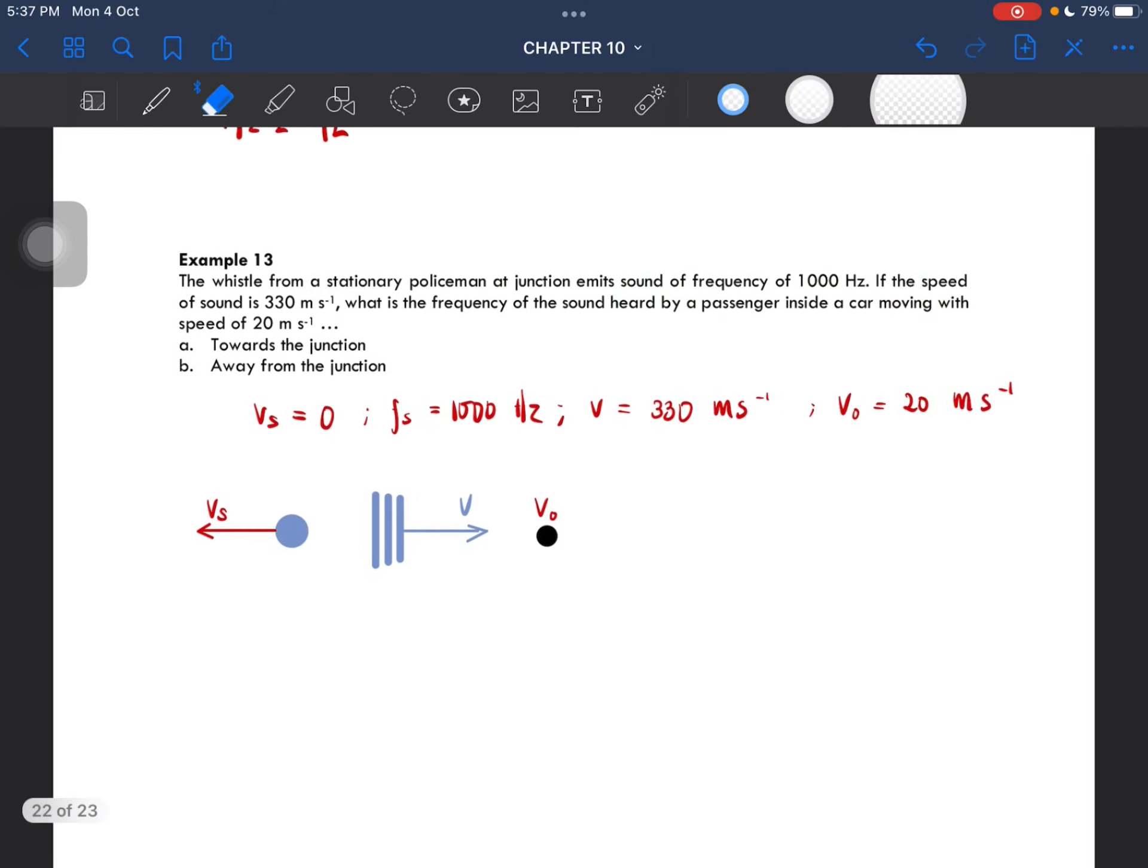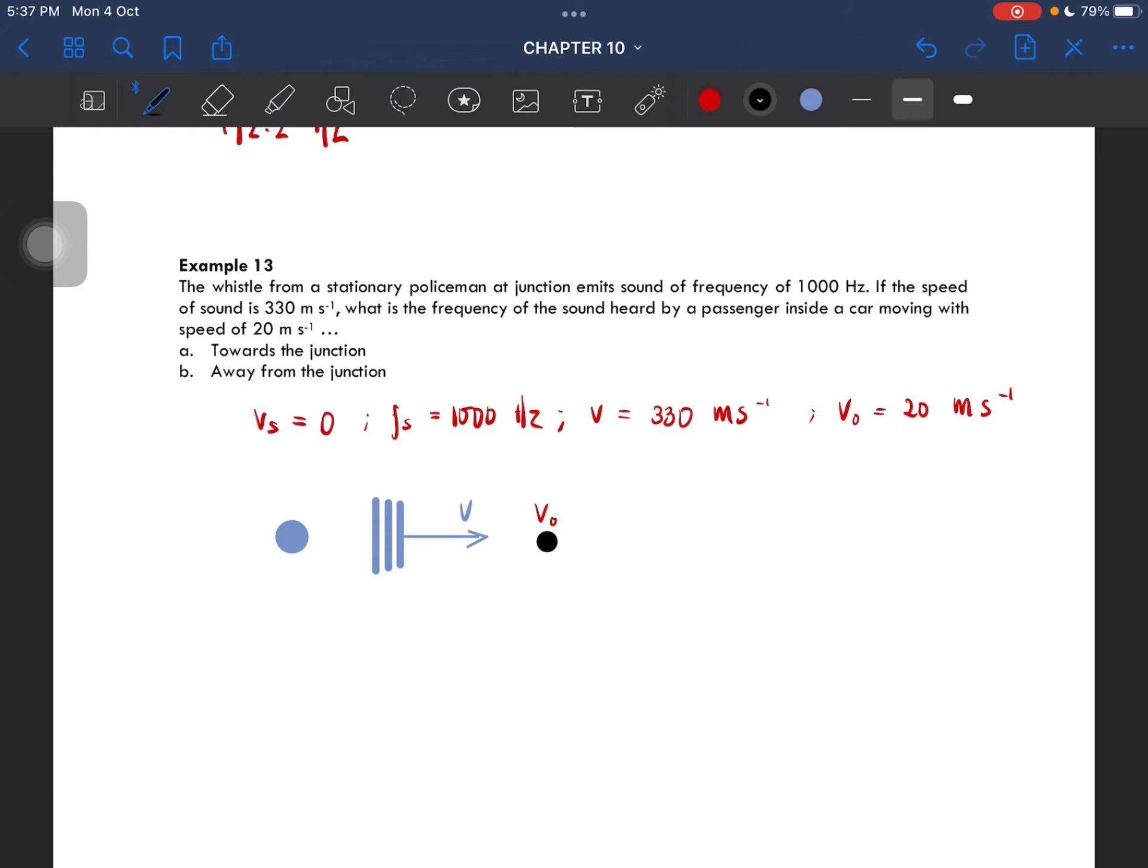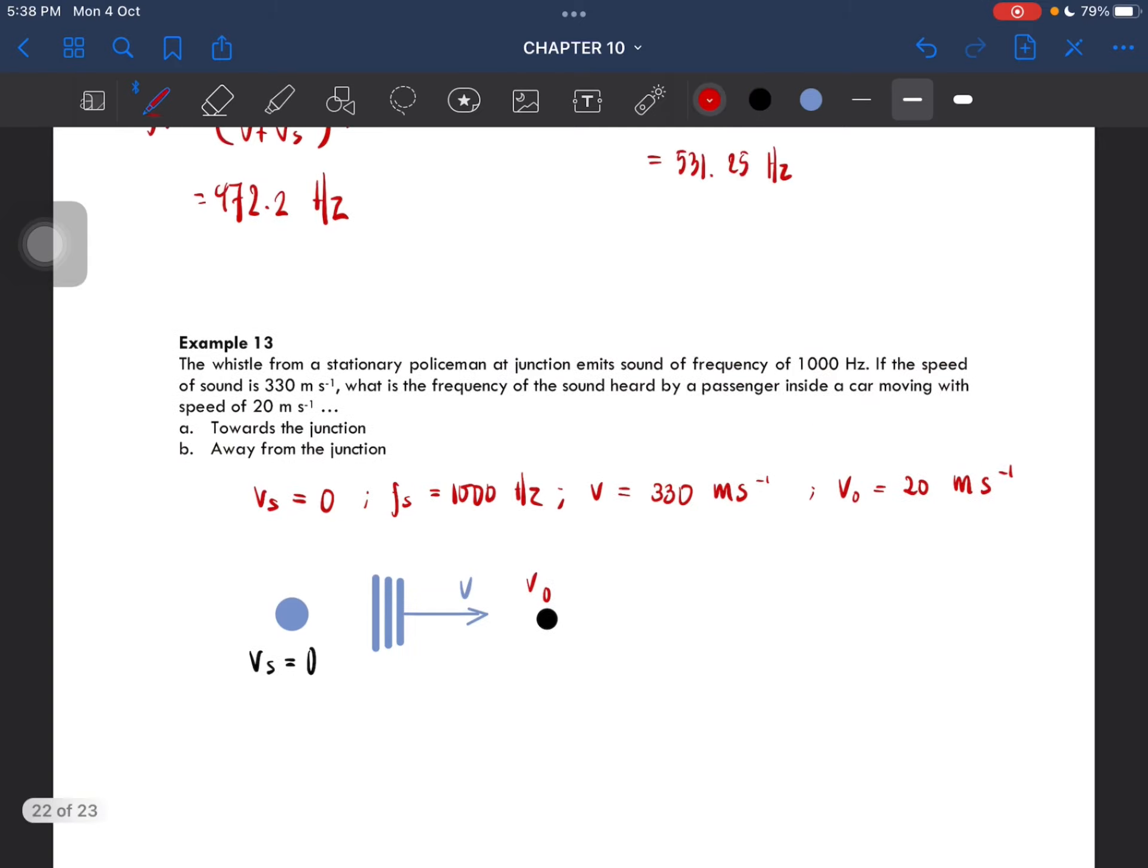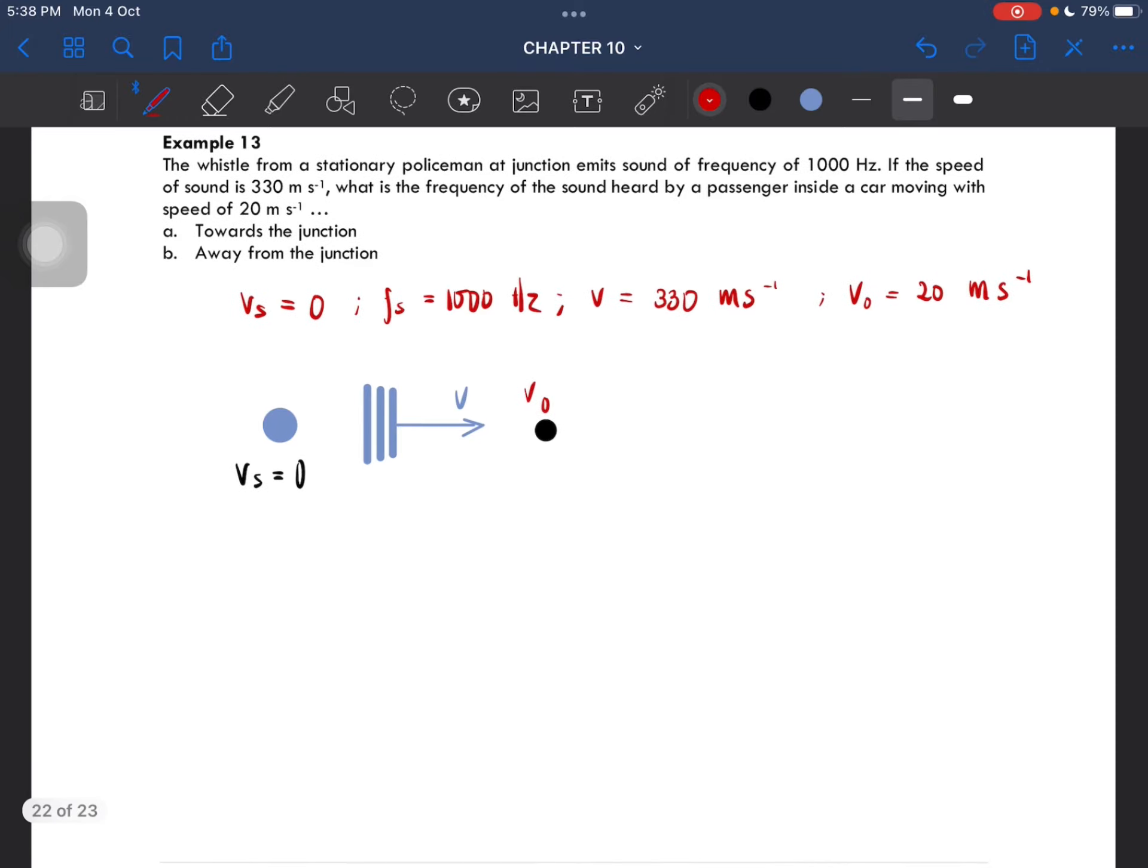Okay, so the source is not moving, and then the observer is moving towards this junction. So it is moving towards the junction in this direction.